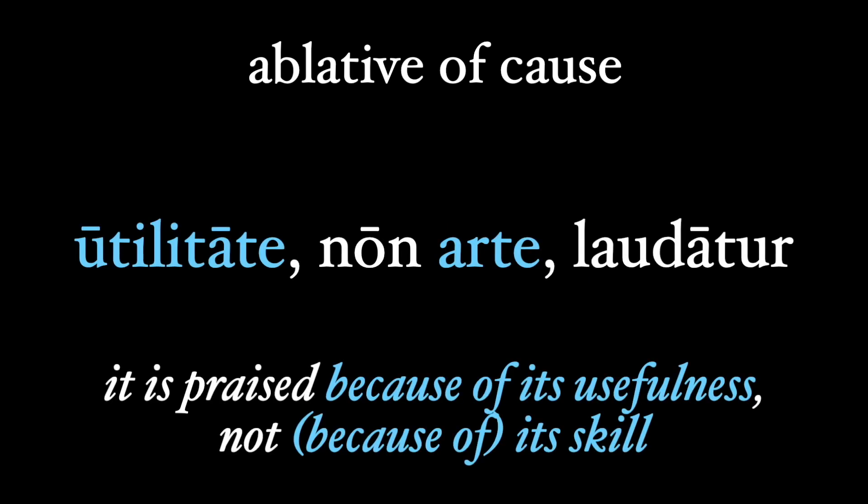Utilitate non arte laudatur — it is praised because of its usefulness, not its skill. Both utilitate and arte are ablatives of cause, giving us the reason for the action of the verb, or not in the case of arte. I used 'because of' here to translate these ablatives, but the preposition 'for' also works: it is praised for its usefulness, not for its skill.